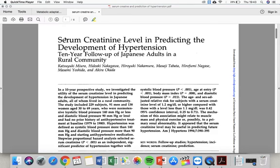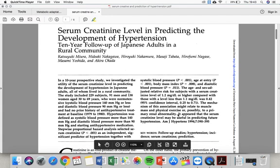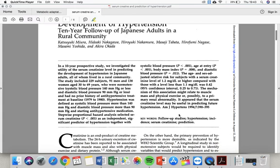The title is Serum Creatinine Level in Predicting Development of Hypertension. This study has been published in 1994 and here in the end the authors say it appeared that the serum creatinine level might be useful in predicting future hypertension. It seems that the creatinine level can be utilized to predict the incidence of future hypertension.